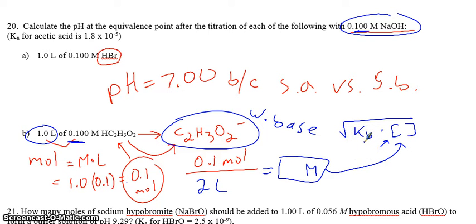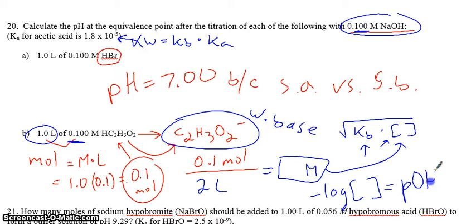Now, the Kb, you'll have to get the Kb from the Ka through Kw. Kw is Kb times Ka. So you have to solve for Kb. Plug that into here. Once you get the square root, then you get negative log of the concentration. This will give you pOH. Then subtracting from 14, and voila, you can go home.